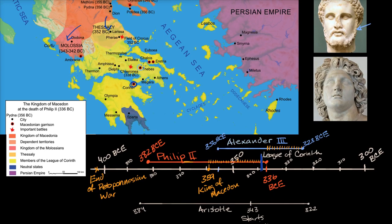What's really important is that he's able to unify the Greek city-states outside of Sparta. In doing so, he sets things up for his son, the famous Alexander the Great, to continue to unify Greece. Alexander the Great is actually able to subjugate Sparta, and more famously, he goes off to conquer the entire Persian Empire and beyond in his short life. We'll have at least another video on that.